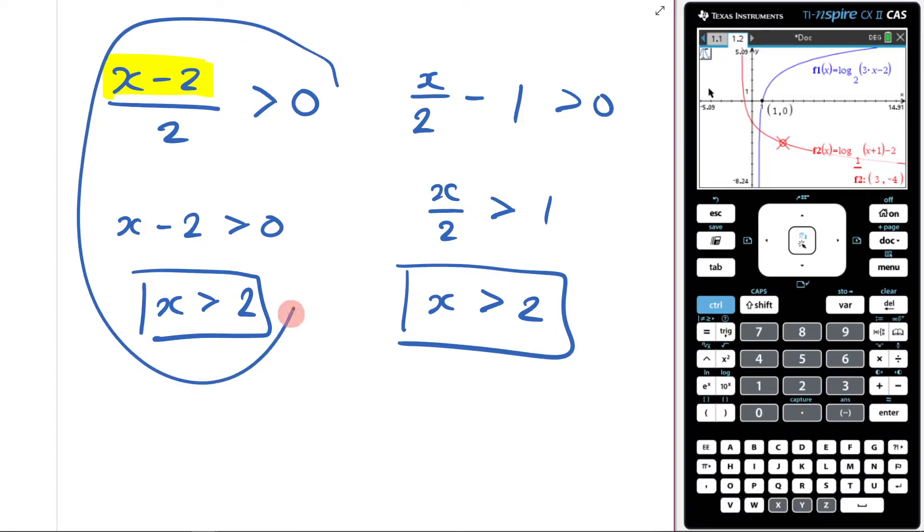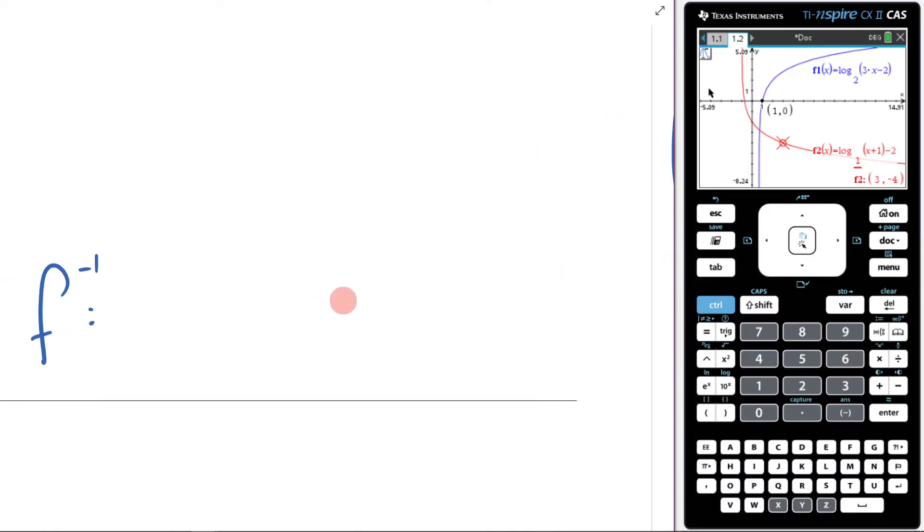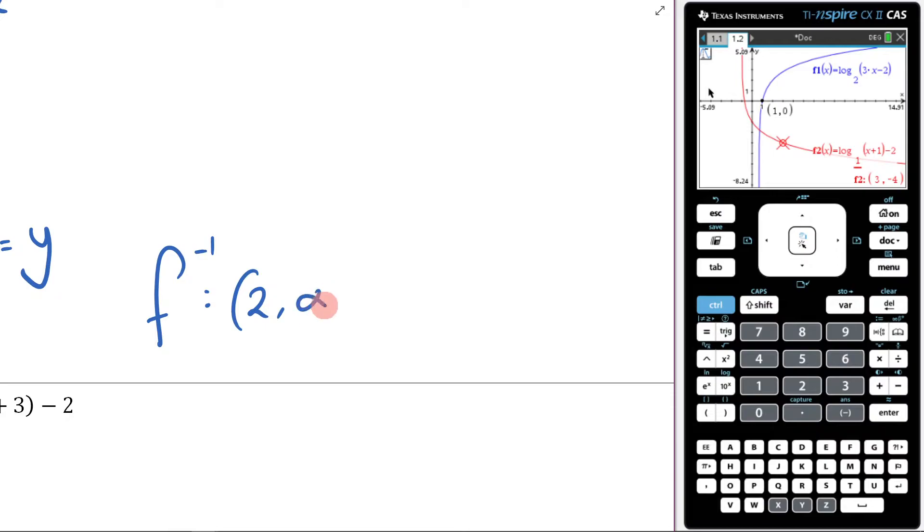But I kind of find that a bit of a silly way to do it. I think this way is just more sensical. Sensical? Is that a word? Common sensical. I don't think that's a word either. This is going to be 2 to infinity, because it's greater than 2.